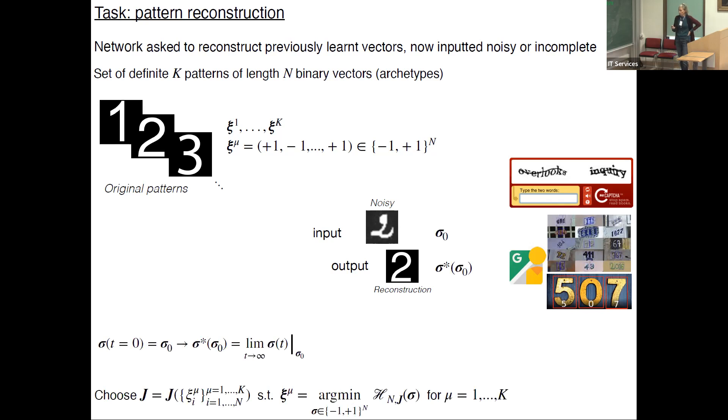The strategy is the following: I initialize the neural configuration as sigma zero, where sigma zero codifies for the input. I let the system evolve according to the dynamics that I introduced before, and I hope that the system will eventually reach a stationary state corresponding to the reconstruction of the archetype. A possible way to realize this path is to choose weights J in such a way that each archetype is a minimum of the Hamiltonian or cost function or energy.